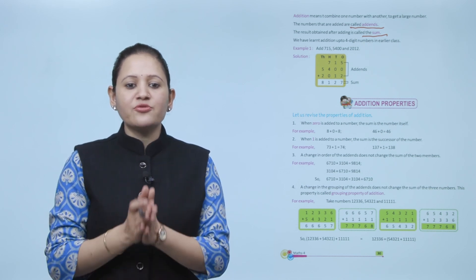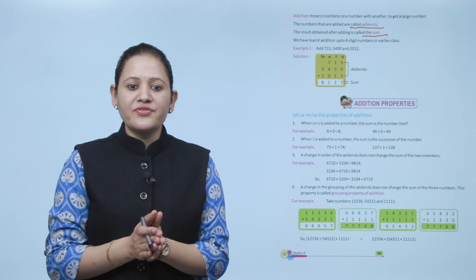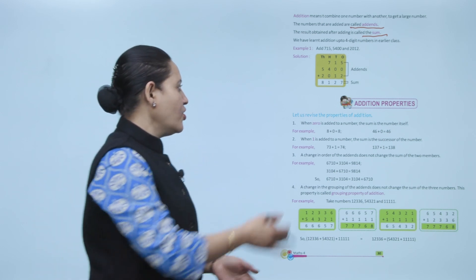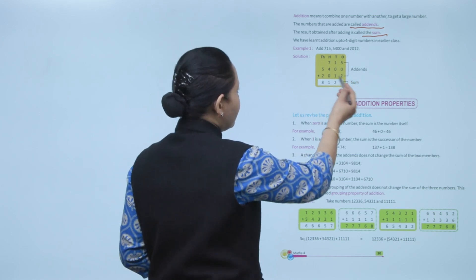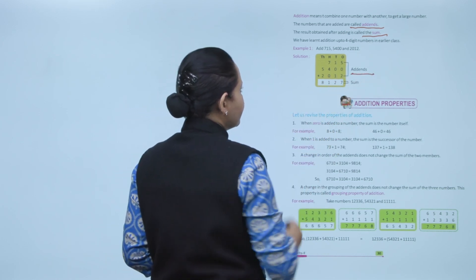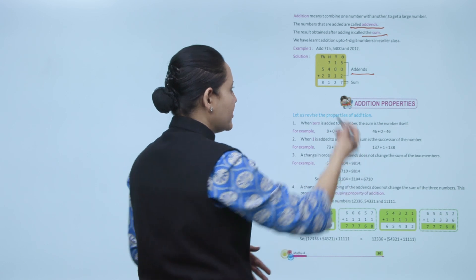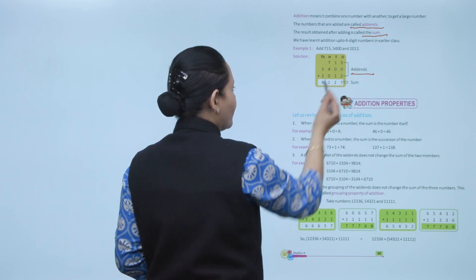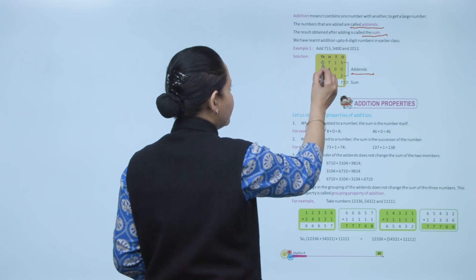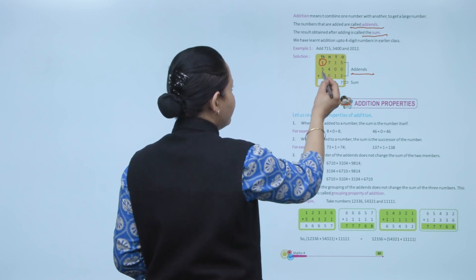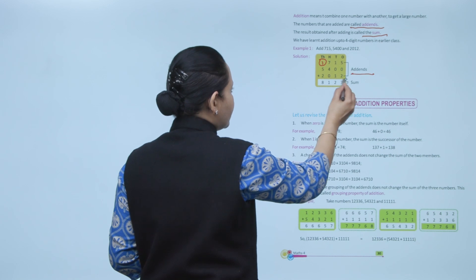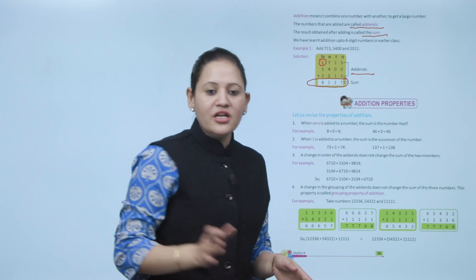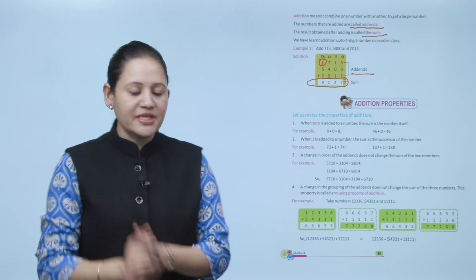We have learned addition up to four-digit numbers in an earlier class. Now we'll take an example: we have to add 715, 5400, and 2012. All three numbers are called addends. Starting from ones: 5 plus 2 plus 0 is 7; 1 plus 0 plus 1 is 2; 7 plus 4 is 11, write 1 carry 1; 5 plus 6 and 1 is 8. The result is 8,127, which is called the sum.